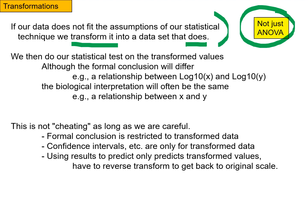Anyway, so we're going to transform our data, and then we're going to do our statistical test on the transformed values. So our formal conclusion may differ. For example, if we're looking for a relationship between things, we might find that there's a relationship between the log base 10 of those things instead of the xy directly.